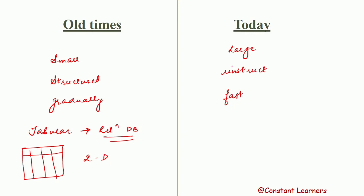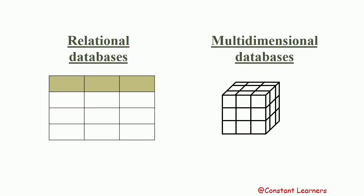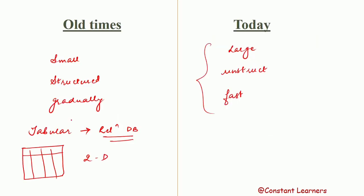But today the data is coming so fast, it is so large, and it is in multiple formats. So this tabular format is not feasible to store this kind of data. We need something more advanced, something more capable to store such challenging data. Relational databases can store data in a tabular format — here we have a table, which is known as a relation.